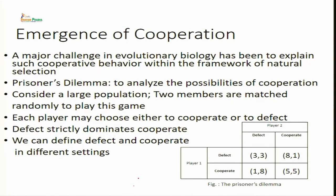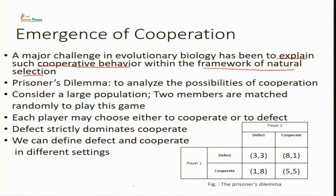Certain species of monkeys use distinct calls for different predators — a different signal for an eagle, a different one for a leopard, and yet another for snakes. This makes sense because the appropriate response differs when the predator is in the air, on the ground, or in the trees. One challenge for evolutionary biologists is explaining this cooperative behavior within the framework of natural selection. We will start our analysis using the prisoner's dilemma, which we have already discussed in earlier lectures, to explain cooperation in the animal world in the realm of natural selection.